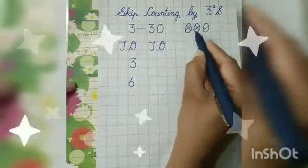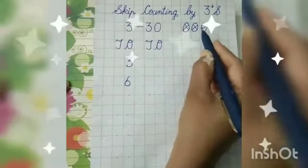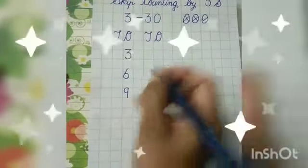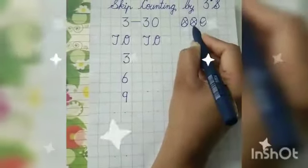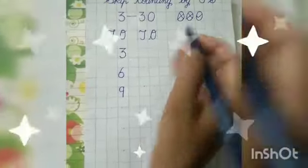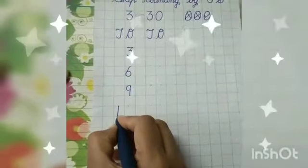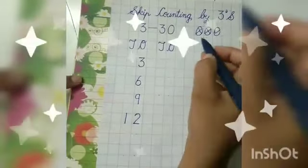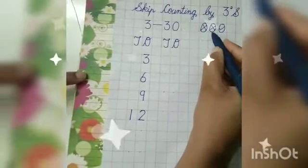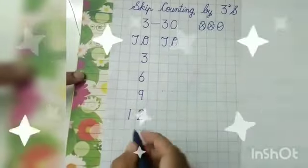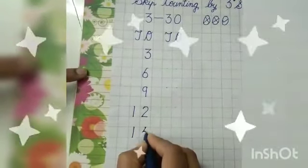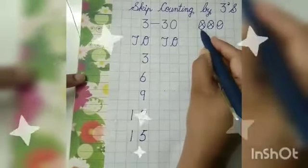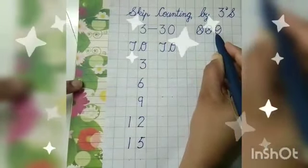Next is 7, 8, 9. This ladoo has a tick option, so we will write 9. Then 10, 11, 12 — this ladoo has a tick option, so we will write 12. Then 13, 14, 15, 16, 17, 18.